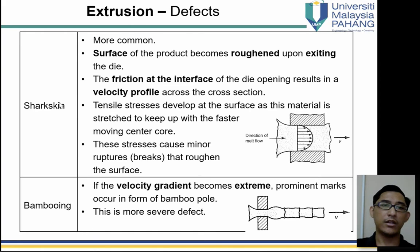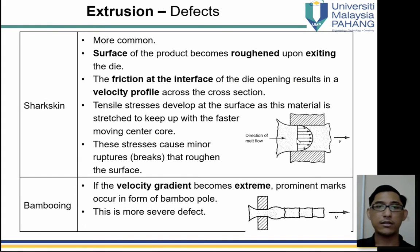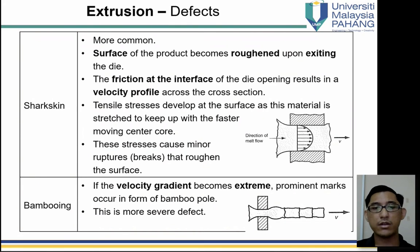Shark skin is a quite common defect. The surface of the product becomes rough upon exiting the die. The friction at the interface of the die opening results in a non-uniform velocity profile — the material near the edges flows slower due to drag from the die wall, while the center flows faster. This velocity difference causes tensile stress at the surface as the material is stretched to keep up with the faster-moving center core, causing minor surface cracks and roughening.